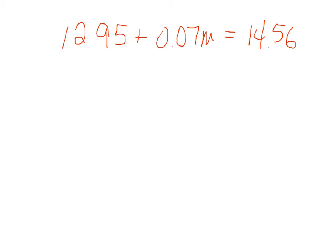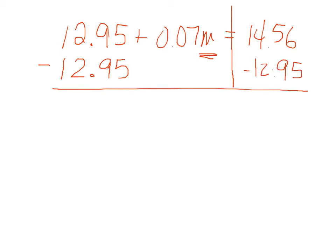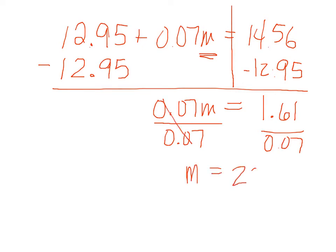So I have $12.95 plus 0.07M equals $14.56. Okay, we have an equation. That's the hardest part about these word problems. Now we just need to solve for it. We're trying to isolate the variable. So we're going to do opposite of what we see here. This is plus $12.95, so we need to do the opposite. And what we do to one side of the equal sign, we're also going to do to the other. Okay, $14.56 minus $12.95 is $1.61, and that equals what's left over over here. Now I have 0.07M equals $1.61. I need to do the opposite of times right here. The opposite of multiply or times is divide.